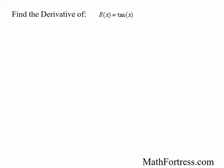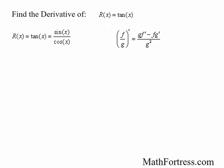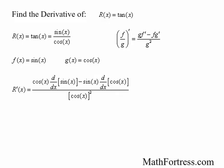Let's find the derivative of tangent. Find the derivative of f(x) = tan(x). First, we need to rewrite this function in terms of sine and cosine. Remember, tangent of x can be rewritten as sine over cosine — in other words, a quotient — so we can use the quotient rule. Letting f(x) = sin(x) and g(x) = cos(x), the derivative of r(x) equals cosine of x times the derivative of sine of x, minus sine of x times the derivative of cosine of x, all over cosine squared of x.